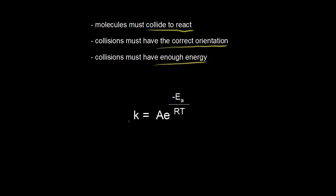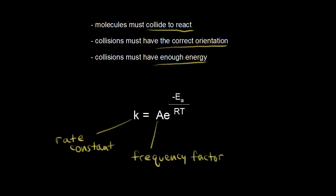Here is our equation, where K is our rate constant — the one we talk about in our rate laws. A is called the frequency factor, also called the pre-exponential factor. A includes things like the frequency of our collisions and also the orientation of those collisions. The term e to the negative Ea over RT represents the fraction of collisions with enough energy for a reaction to occur.